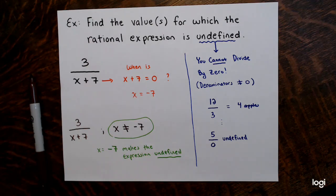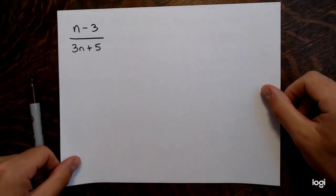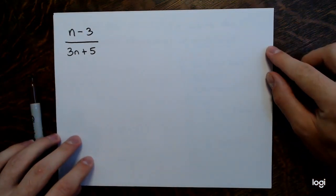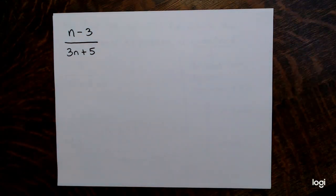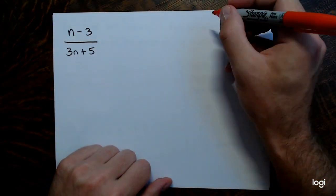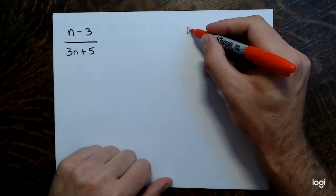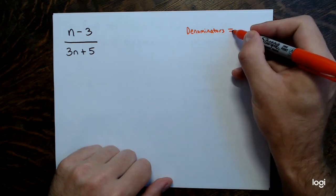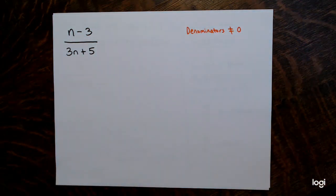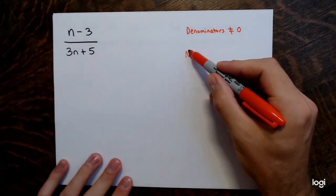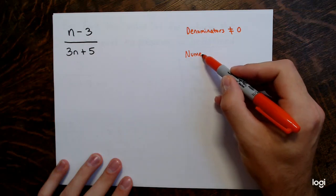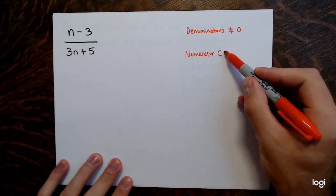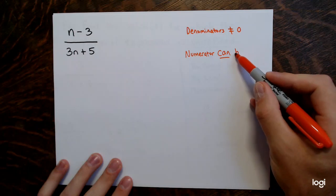Here's another example. This time, there's a variable in both the numerator and the denominator, and I want to point something out: denominators cannot be zero — we've established that, you can't divide by zero, that's undefined. But numerators can be zero. That's fine.